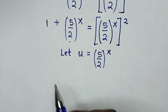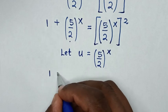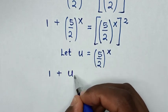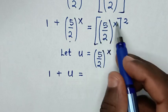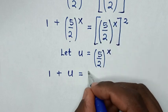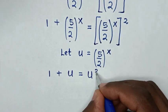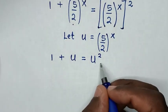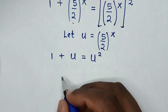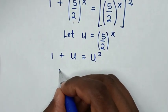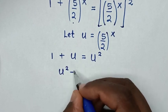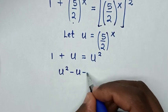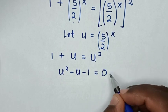Then our equation will be 1 plus — substituting u — in here is u, so it will be u squared. In the next step, we take this u to the right side and 1 to the right side, so it will be u squared minus u minus 1 is equal to 0.